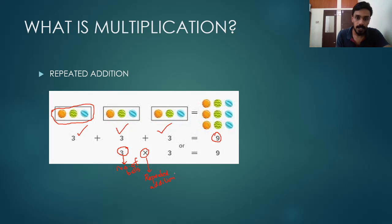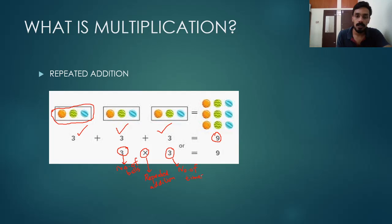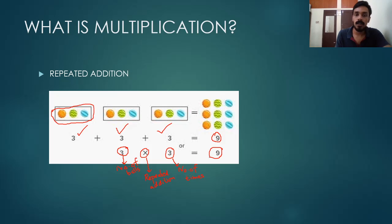The last three shows how many times we are adding — the number of times that we are doing addition. So the number of balls is three, and we are repeatedly adding three times, so the answer is nine. This is how multiplication works — multiplication is repeated addition. I hope this is clear to everyone, so let's move on to the next part.